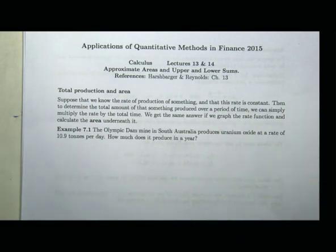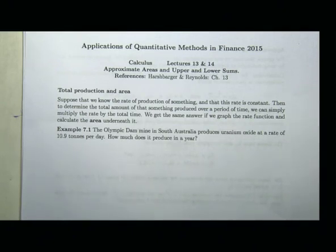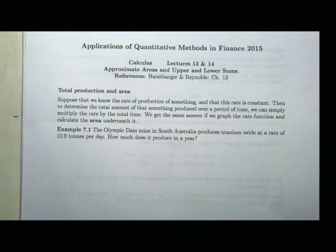Particularly for finance, there are a lot of approximations done because we don't have an actual function for these things. My wife is doing a finance degree and mostly they're about probability distributions and knowing your annuities. If you go to a more quantitative form of finance, you might look at this sort of area.